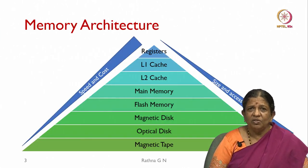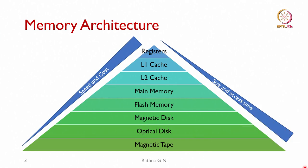Coming to the memory architecture, you see a pyramid here. Registers are closest to the CPU, then L1 cache, L2 cache, main memory, flash memory, and for more storage: magnetic disk, optical disk, and tape at the last part — most of which are almost extinct in the present situation. On the left side, speed is highest at the top and slows down as we go down the pyramid, while size and access time increase going downward.